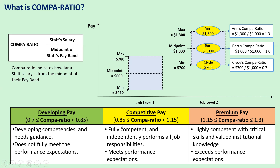For compa-ratio between 0.85 to 1.15, these are people who are typically fully competent, independently perform all job responsibilities, and they meet the job expectations. People who are at premium pay, around a higher compa-ratio, are usually highly competent with critical skills and valued institutional knowledge, and they usually exceed the performance requirements.